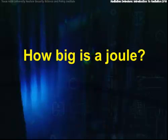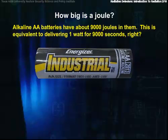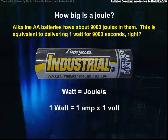Before we march too far away, let me try and give you an idea of how big a joule is. It helps a lot to have some mental idea of how big things are so you can see if your calculations make any sense. An alkaline AA battery has about 9,000 joules in it. This is equivalent to delivering 1 watt for 9,000 seconds, right? A watt is a unit of power equal to 1 joule per second. One amp times 1 volt equals 1 watt. You remember all this.